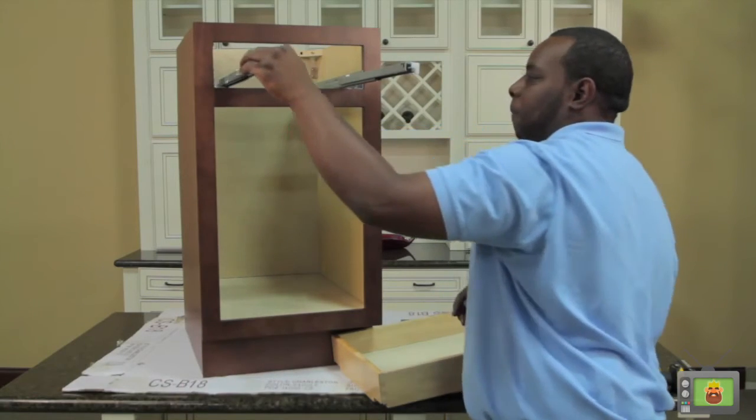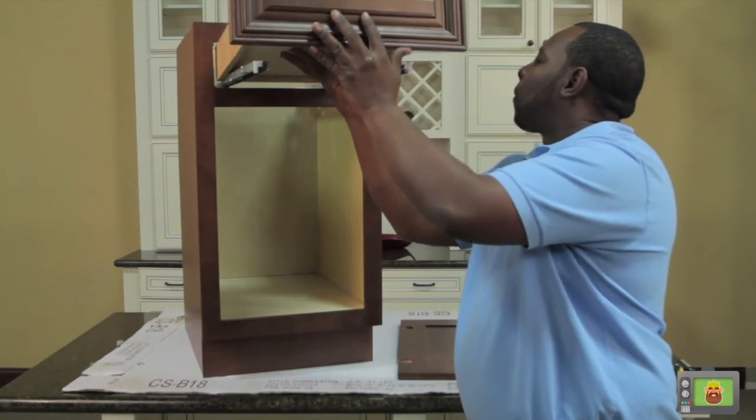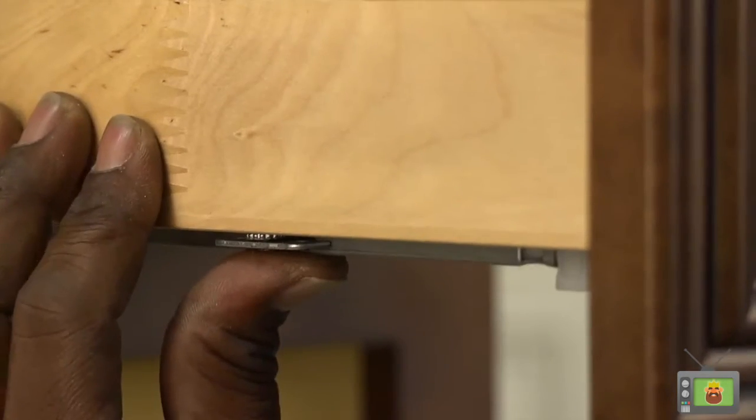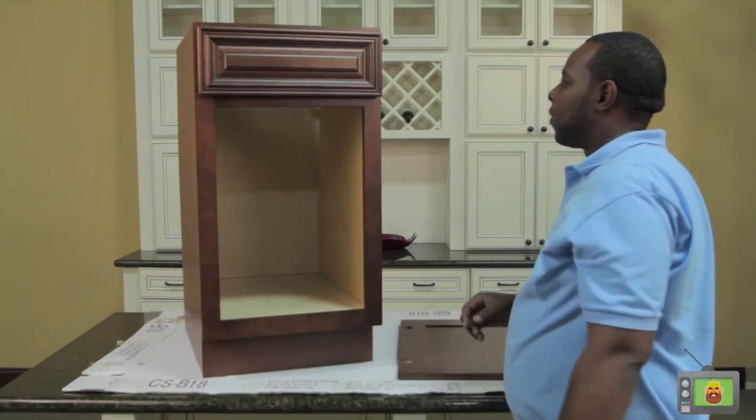Once the glides are installed, extend the glides and install the drawer box. Make sure the back is locked into the hook and the sides are seated into the pin. If you are constructing a cabinet with more than one drawer, repeat these steps for the other drawers.